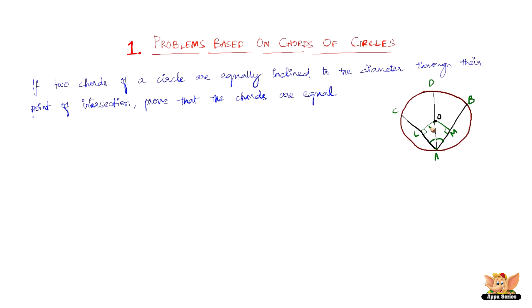To prove OL equals OM, we consider triangles OLA and OMA and prove that these two triangles are congruent to each other. Then we can prove OL equals OM by corresponding parts of congruent triangles.